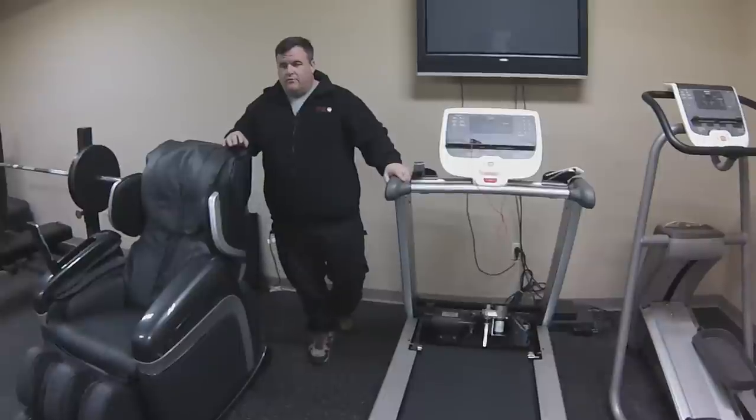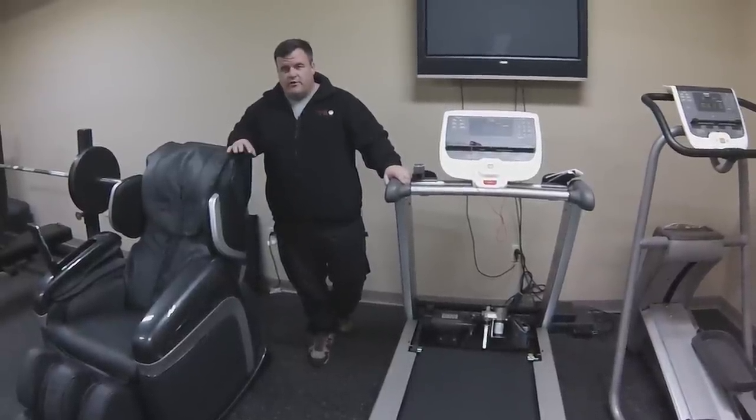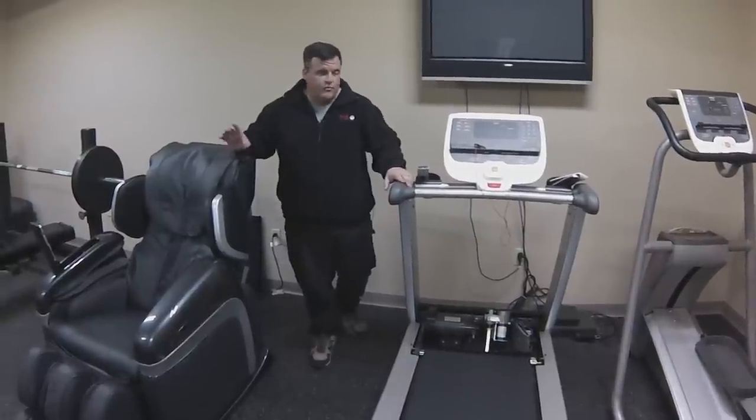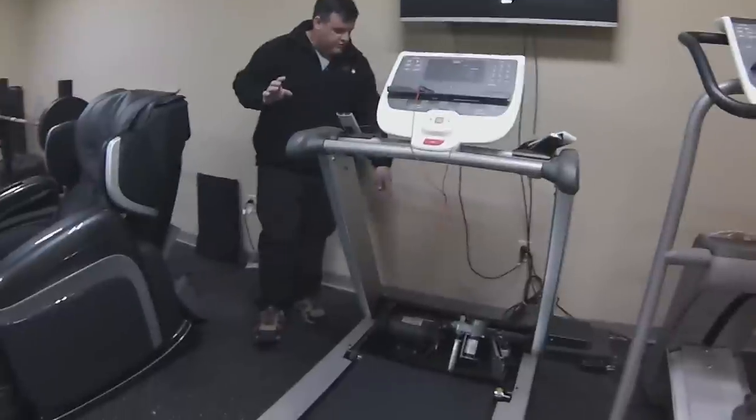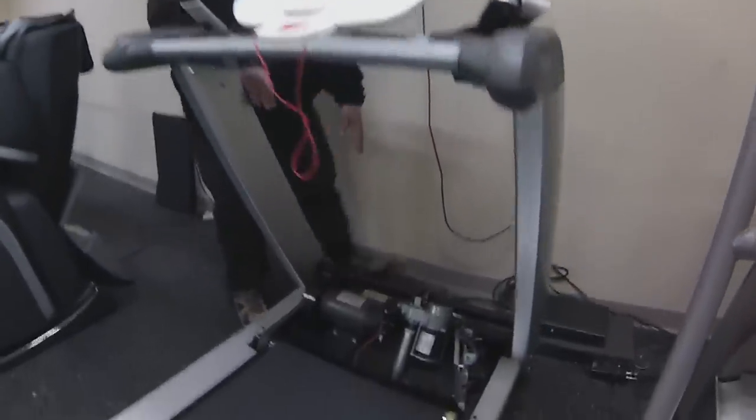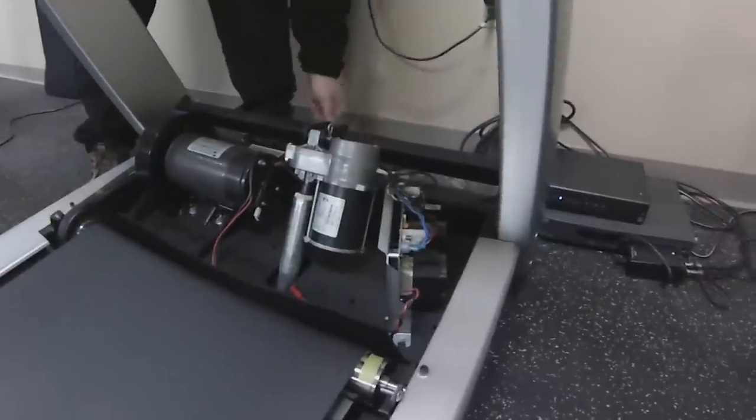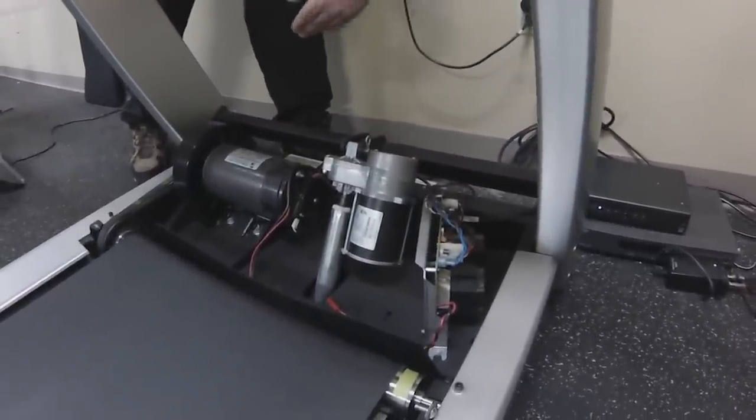Now, why the treadmill tripped the breaker is something we've covered in previous videos and probably will cover again. But what you're left with is something from the power entry of the treadmill in through the front wiring, through the switch, through the line filter, and into the lower board.